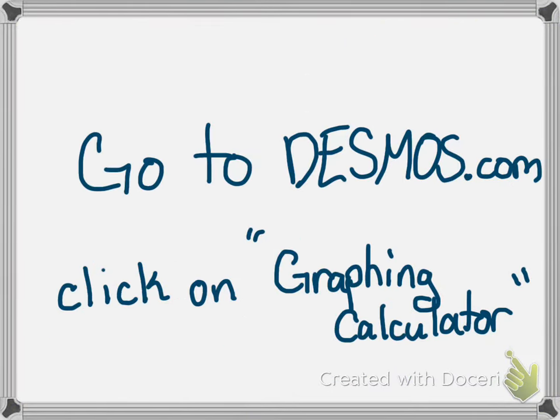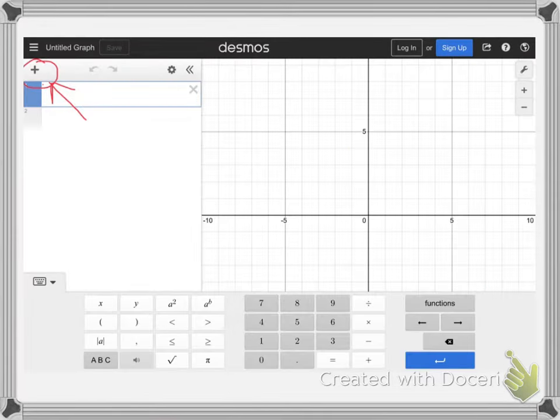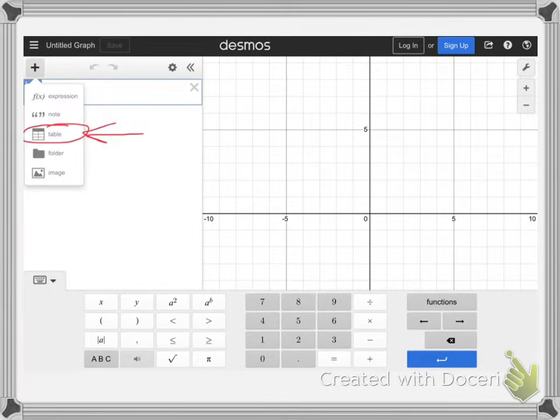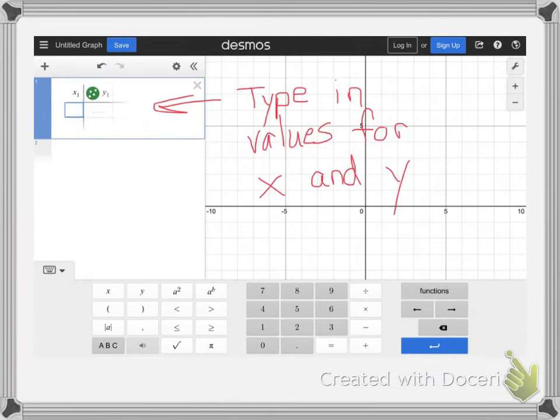First thing you want to do, go to Desmos.com and click on the button that says graphing calculator. In that top left hand corner you'll see a plus sign, click on that. Then you'll see these options come down. Click on the option that says table and this should pop up.